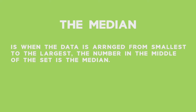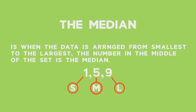The median is when the data is arranged from smallest to largest — the number in the middle of the set is the median. Think of it like a t-shirt: S for small, M for medium, and L for large. The number in the middle is the median — it looks almost like 'medium'.